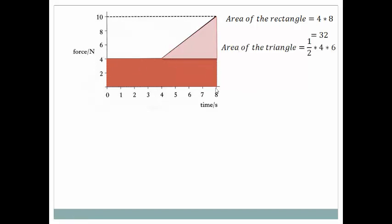To find the total impulse, we add the area together, so 32 plus 12, that is 44. Hence the first answer: impulse 44 Newton second.